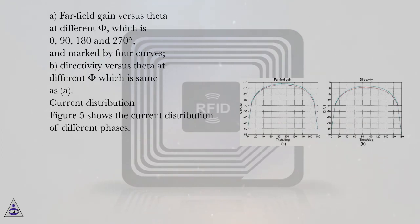A: far-field gain versus theta at different phi, which is 0, 90, 180, and 270 degrees, marked by 4 curves. B: directivity versus theta at different phi, which is same as A.